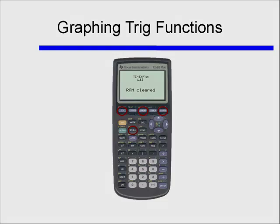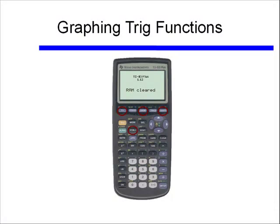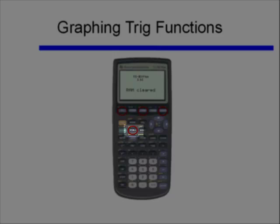We'll also be using the ZOOM button, and we'll be using it a little differently than you have for other types of functions. We'll also need to use the variable button, or at least that's what I call it, it's the one that's labeled X, T, theta, and N.